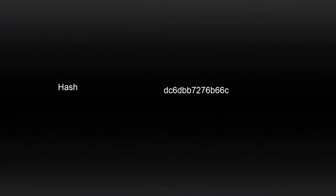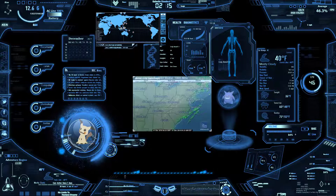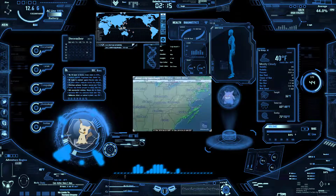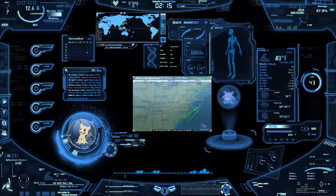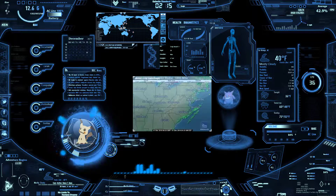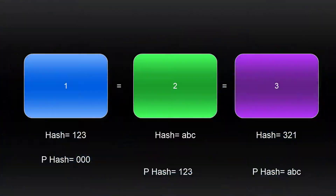A hash is simply a fingerprint. If you change the data within a block, the hash of that block changes as well. This is fairly important for tamper-proofing, which I'll get into in a moment. Along with the block's own hash, each block also stores the hash of the previous block.